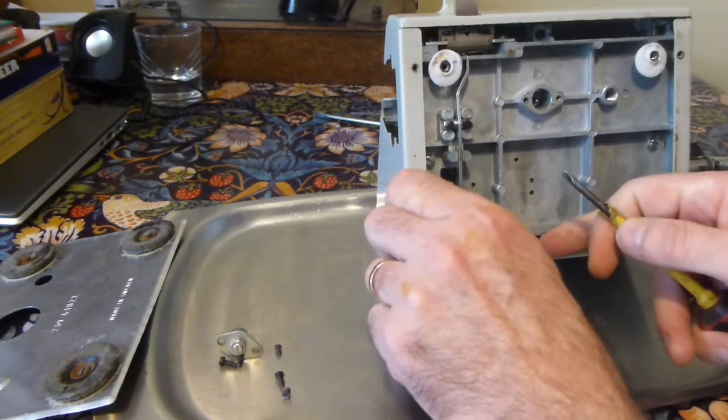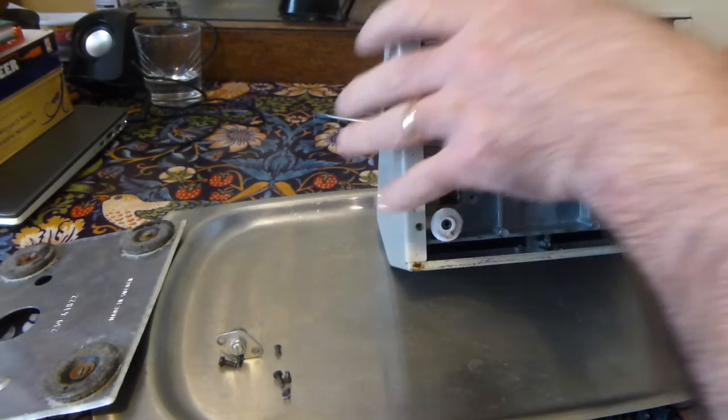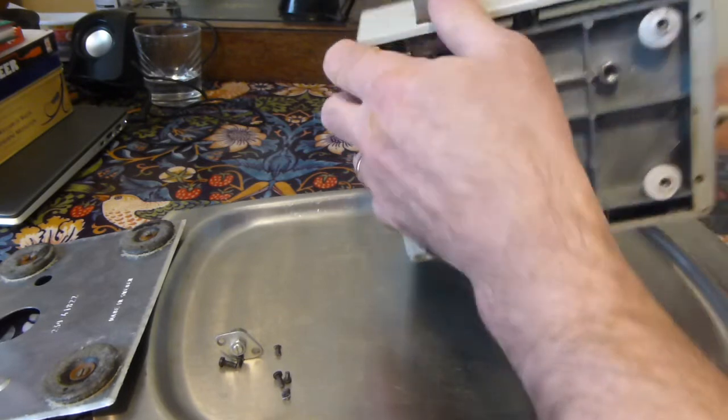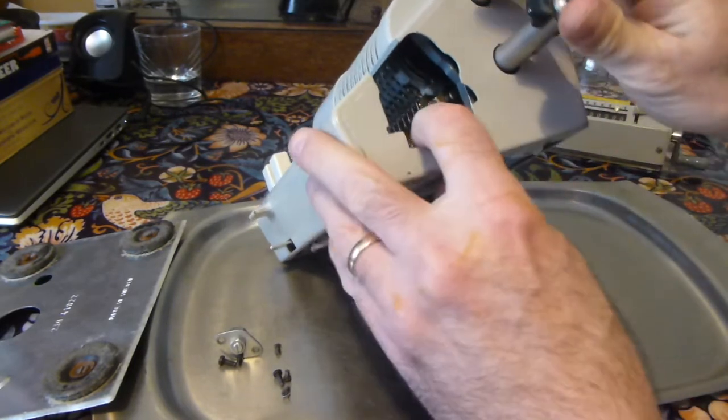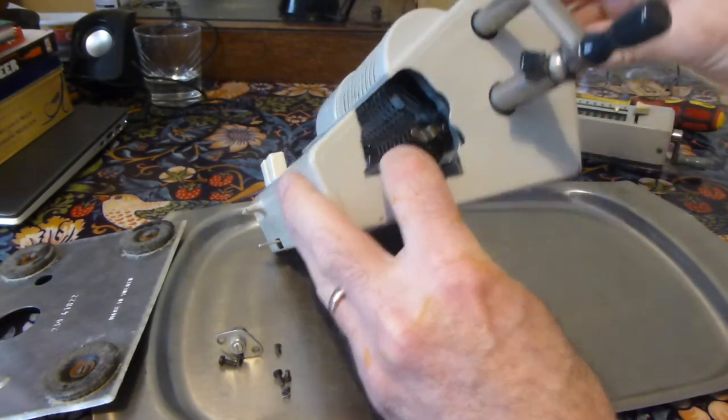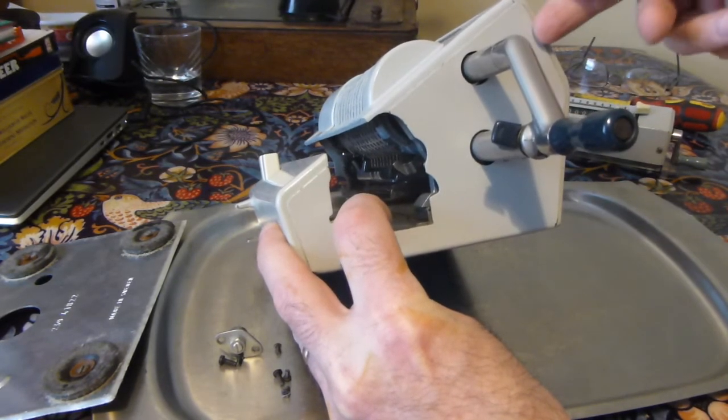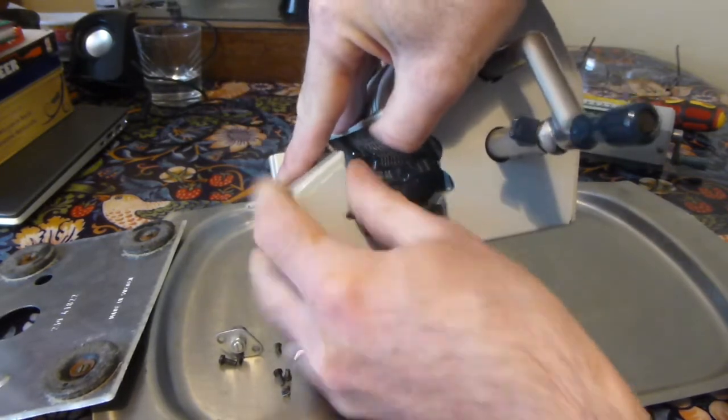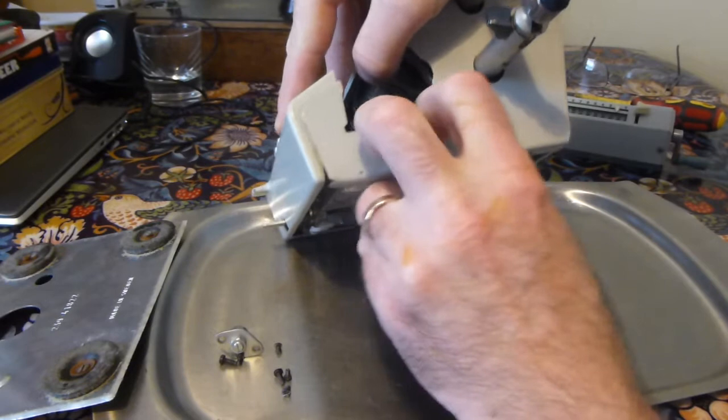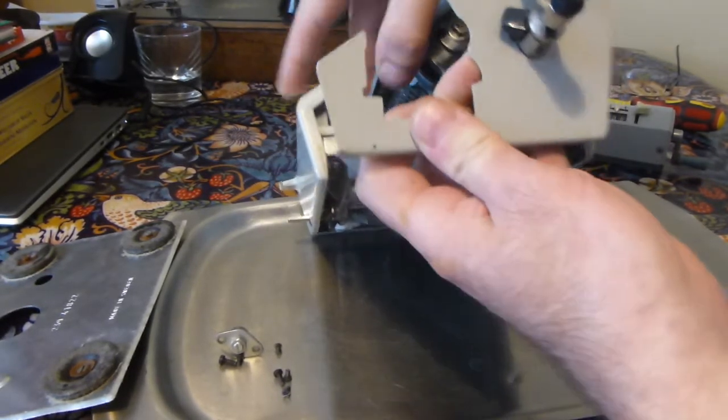With the screws removed you see the reason why you removed the carriage, because with the carriage removed you've got more freedom of movement for the panels. Now the panels are held in by clips, there's a clip under here and a clip on there. So if you pull the side panel down and then to the right then it just pops out.